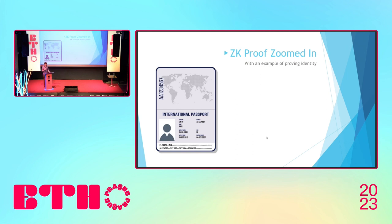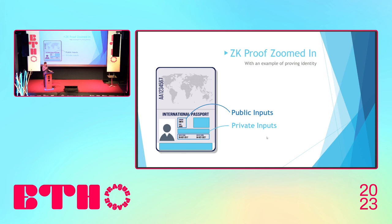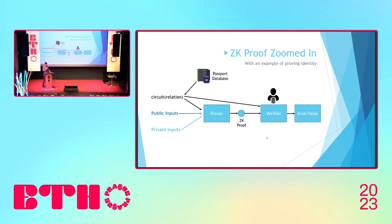Let's say you want to show you have a valid passport and you're over a certain age, but you don't want to reveal other data like the expiry of the document. You can hide some of the inputs in your passport — assuming it's a digital passport — leaving public parts like your name. We have something called witness data: you take all of that together, do some calculations — that's the witness data. You stick into the prover the private inputs, the public inputs, a relational circuit, and maybe a digital certificate from your government. The prover creates a proof, and the verifier can just check true or false: is it a real passport? Do these conditions match?